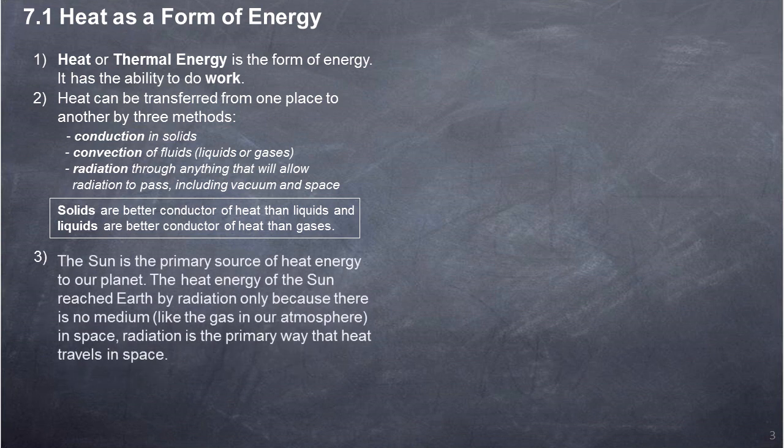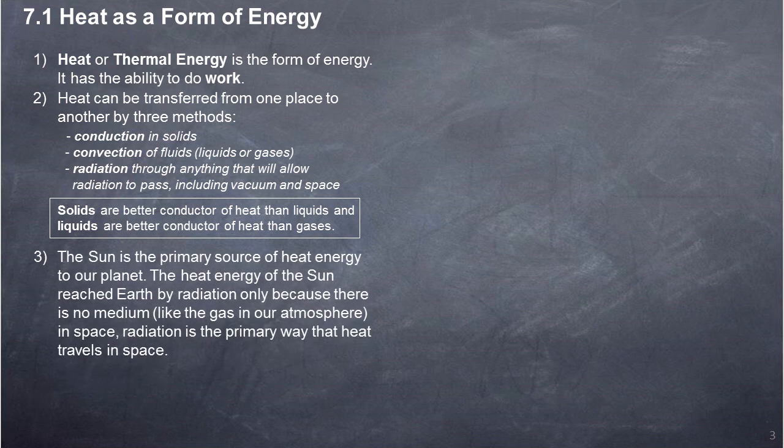The Sun is the primary source of heat energy to our planet. The heat energy of the Sun reached Earth by radiation only, because there is no medium in space. Radiation is the primary way that heat travels in space. Beside the Sun, there are other sources of heat.